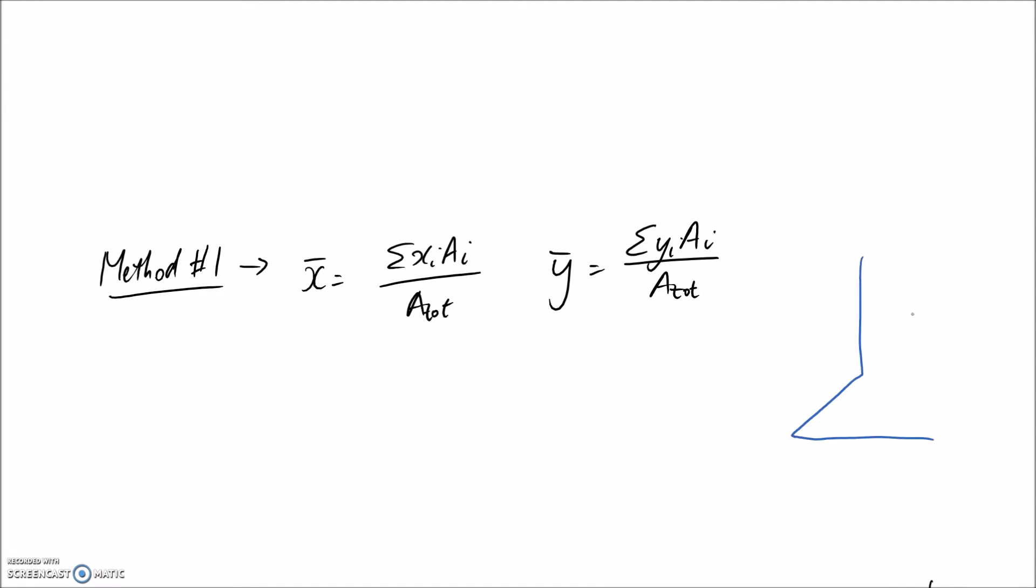So let's pretend it looks something like this. And we want to know where the center sits. So what we should do is divide this into more normal looking shapes that we're familiar with. For example, we could divide this into a triangle here and a rectangle here. And each of those shapes, it's easy enough to find out where the centroids lie.